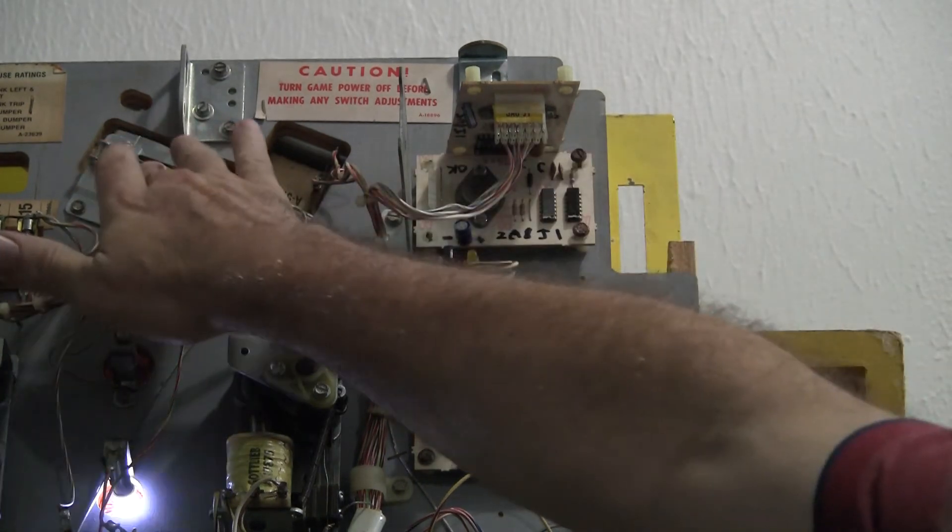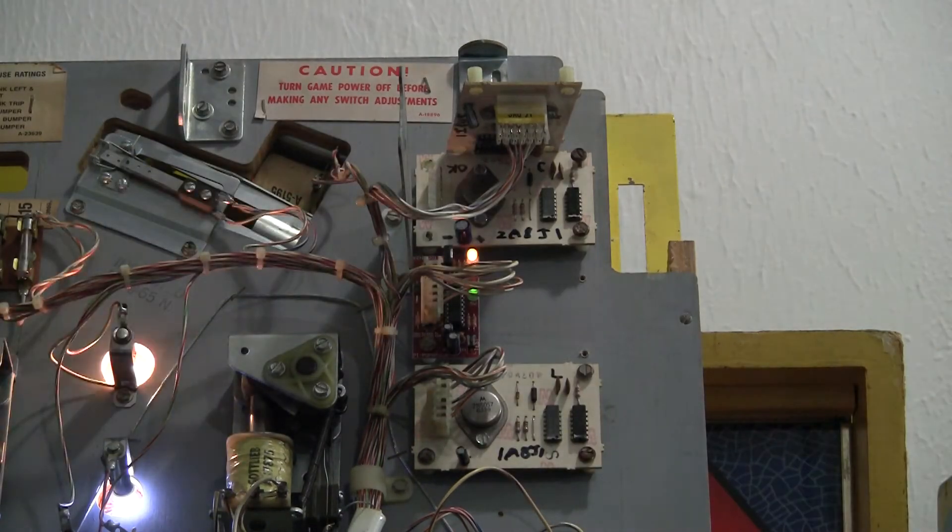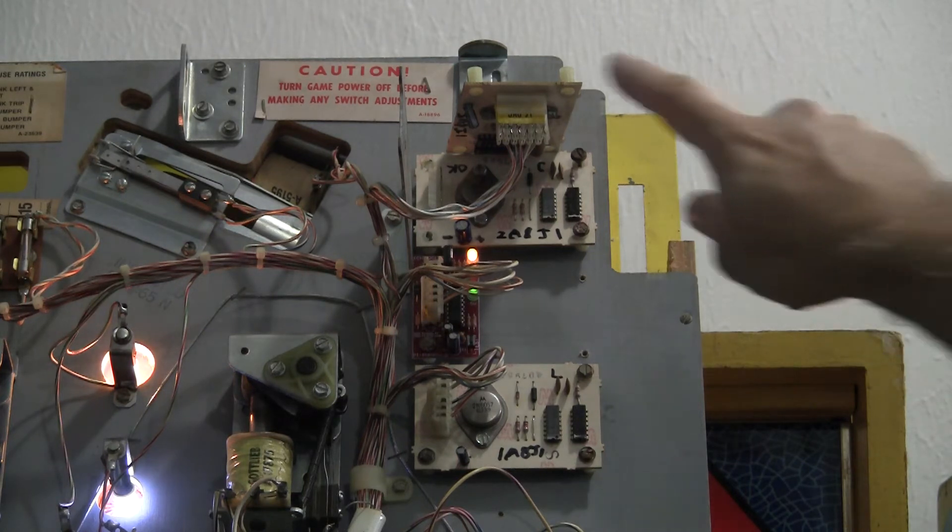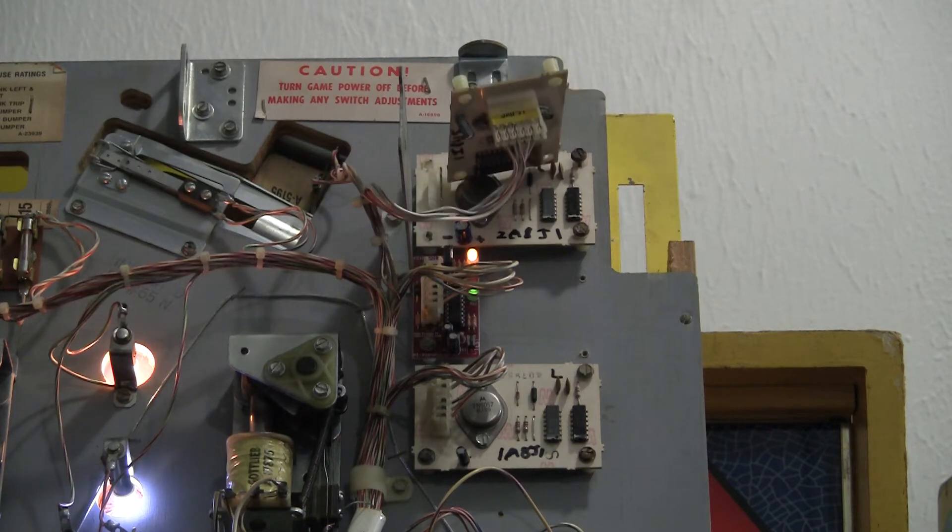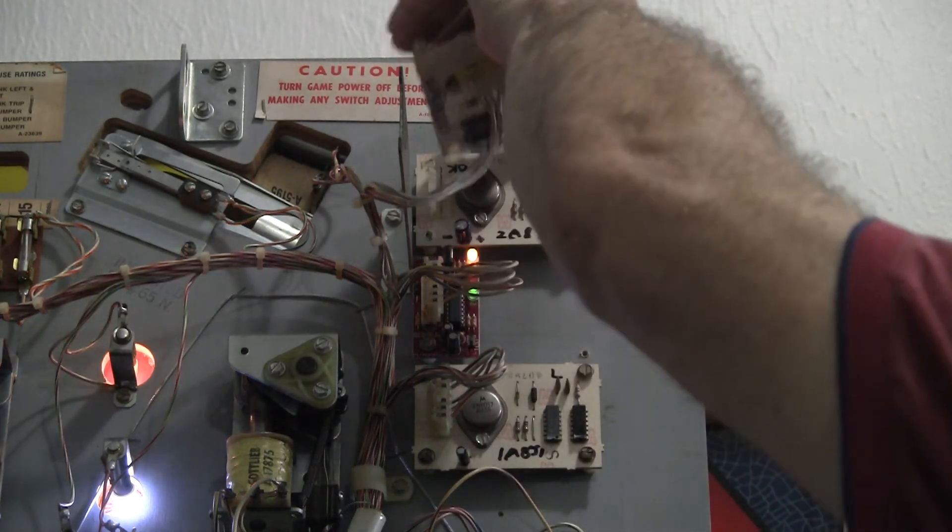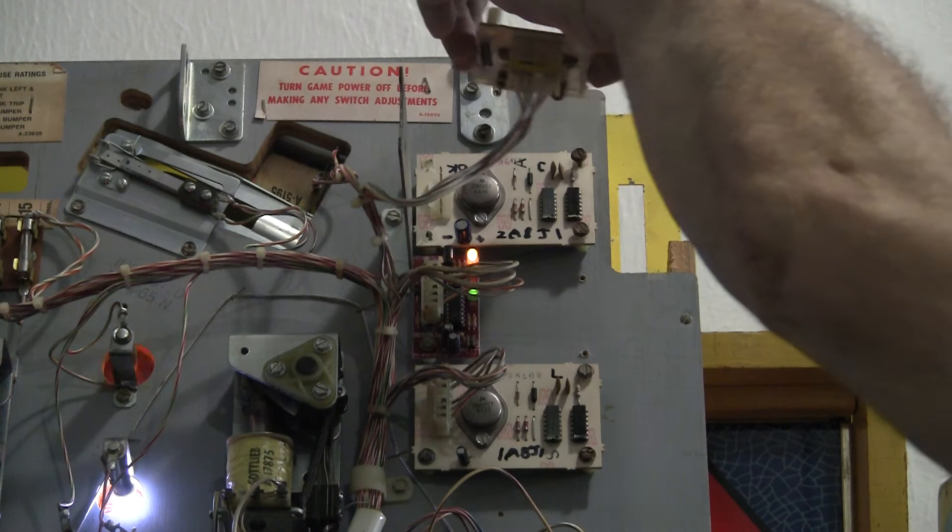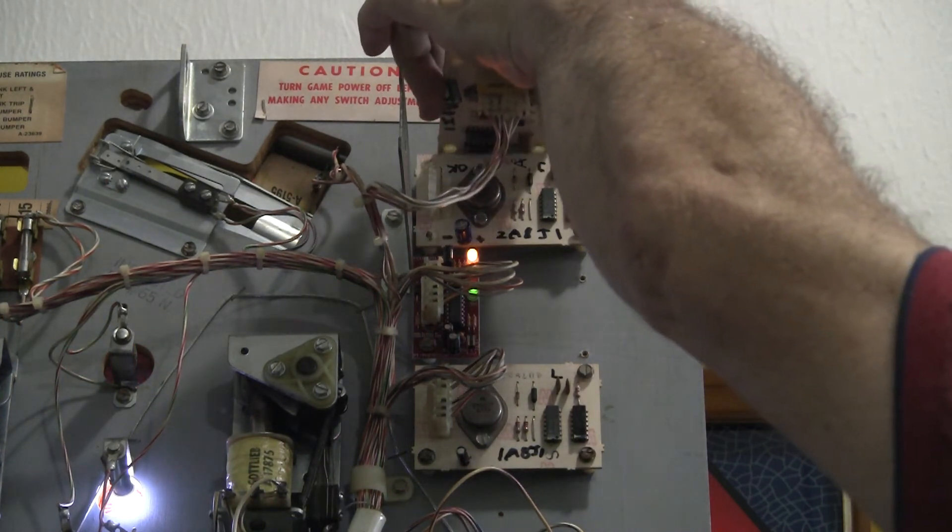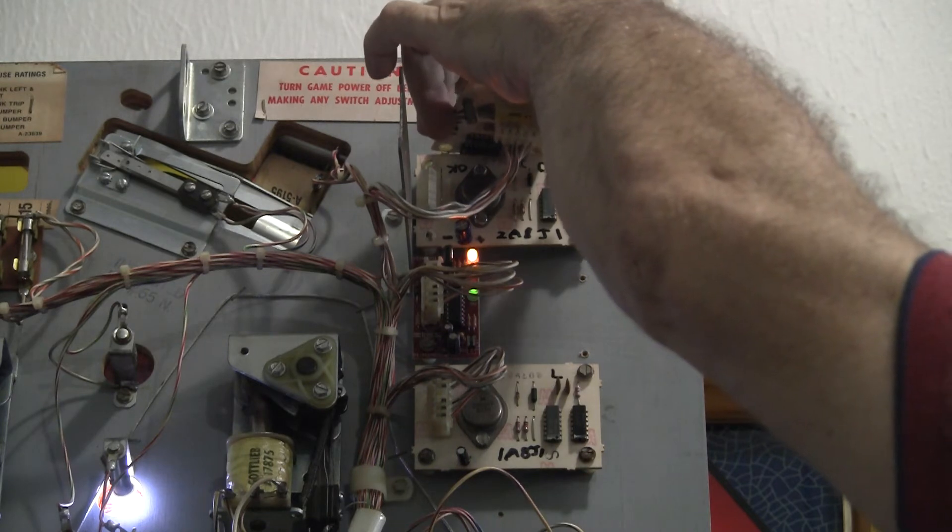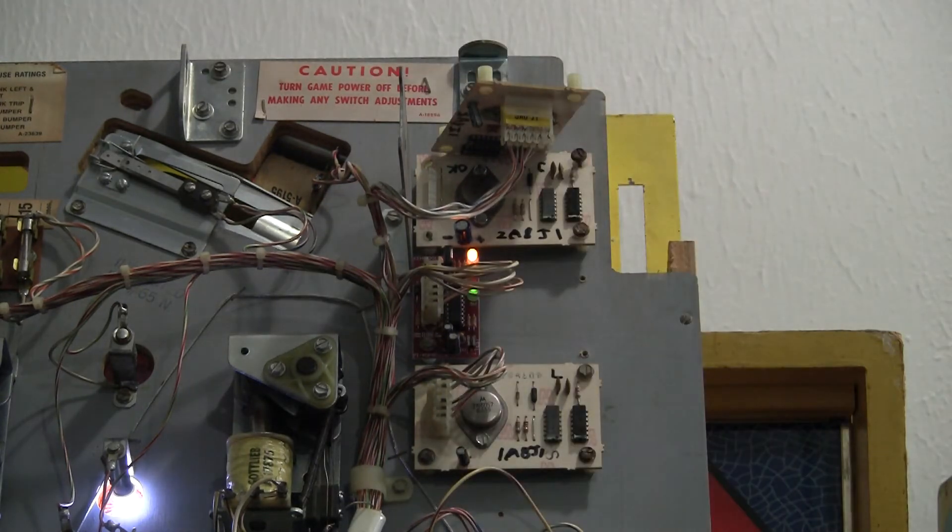All right. So the game started up. This is the pop bumper I'm going to trigger with my hand. So you notice it's firing multiple fires with one trigger. See that? Sometimes when I press it we get two at the same time instead of just one.